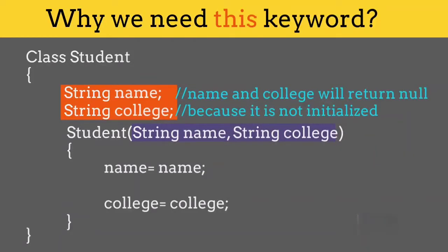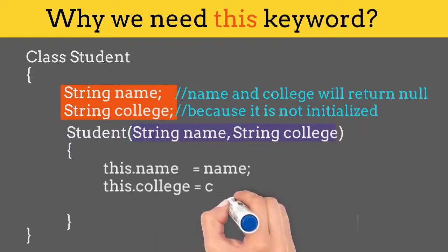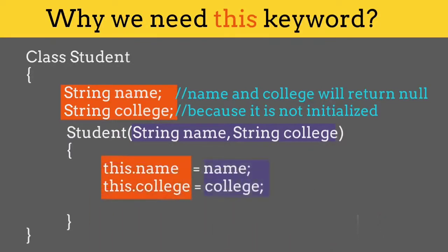Here this keyword comes into the picture. Instead of writing name equal to name, we will write this.name equal to name and same for college. This keyword refers to the current object. So Java will understand that we are referring to the class variables.